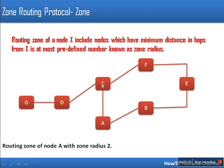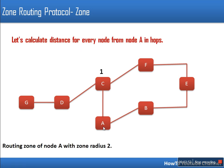To find the zone for node A with zone radius 2, we calculate the distance from every node to node A in number of hops. Node C is 1 hop away, node D is 2 hops away, node G is 3 hops away. For node E, if reached one way it is 3 hops but another way it is 2 hops — in case of multiple distances we select the minimum.